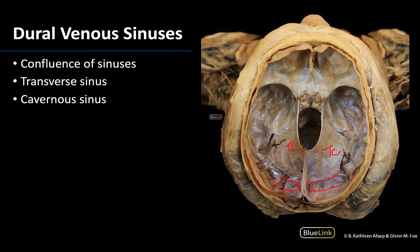Moving anteriorly, we can begin to conceptualize the expansive cavernous sinuses. These paired sinuses are lateral to the body of the sphenoid, and they extend from the superior orbital fissure all the way back towards the apex of the petrous part of the temporal bone — this general area is where the cavernous sinuses sit during life. Numerous neurovascular structures traverse either directly through the cavernous sinus or in the lateral walls of the sinus, which we'll actually dissect in an upcoming session.